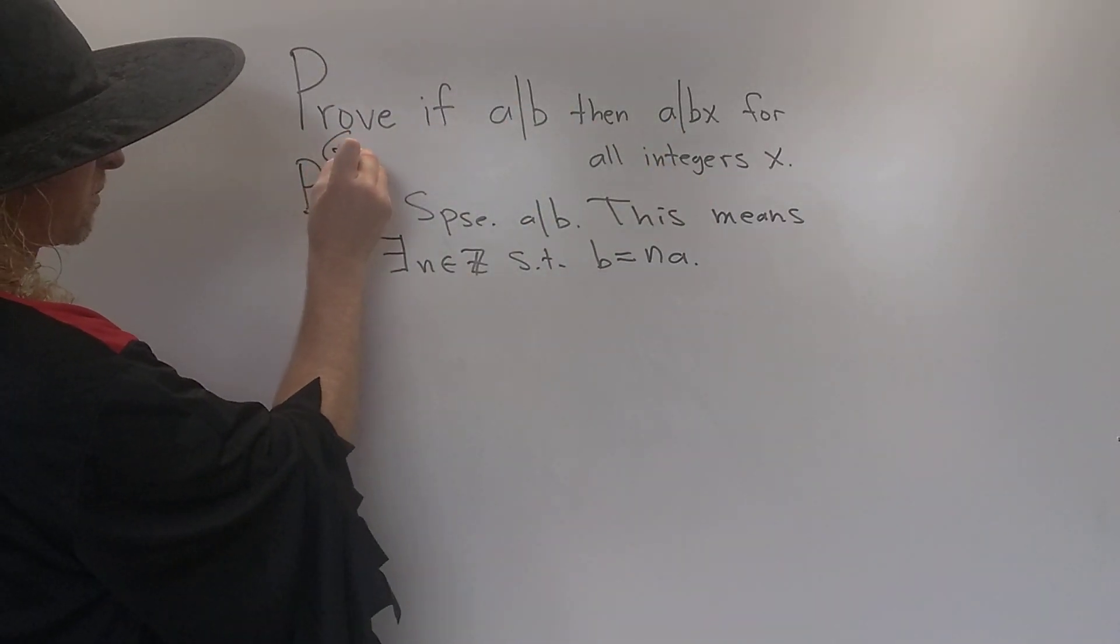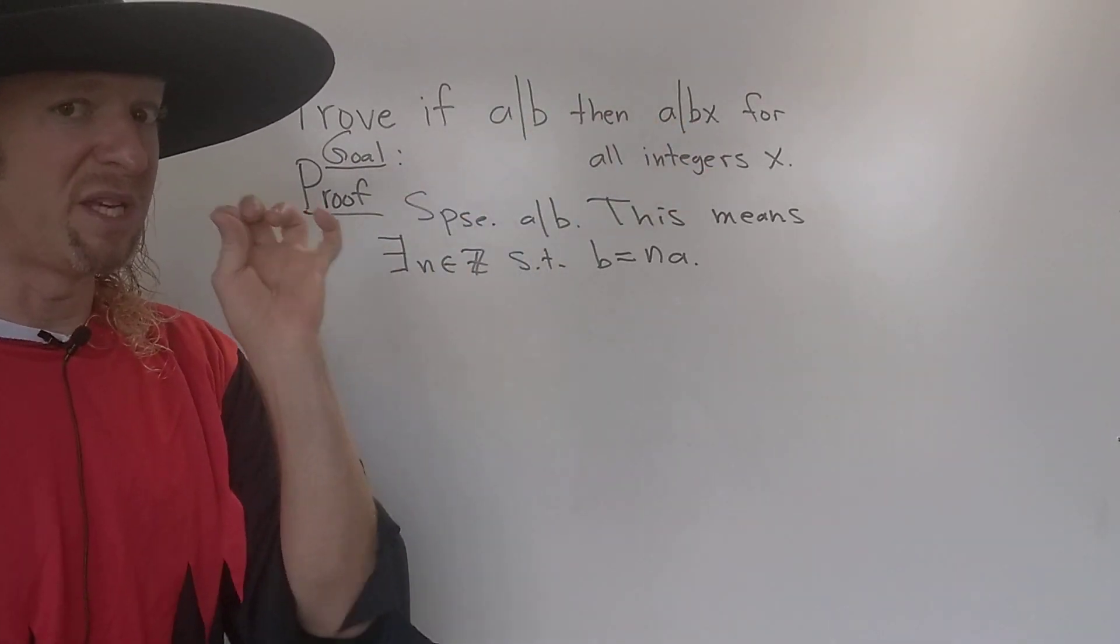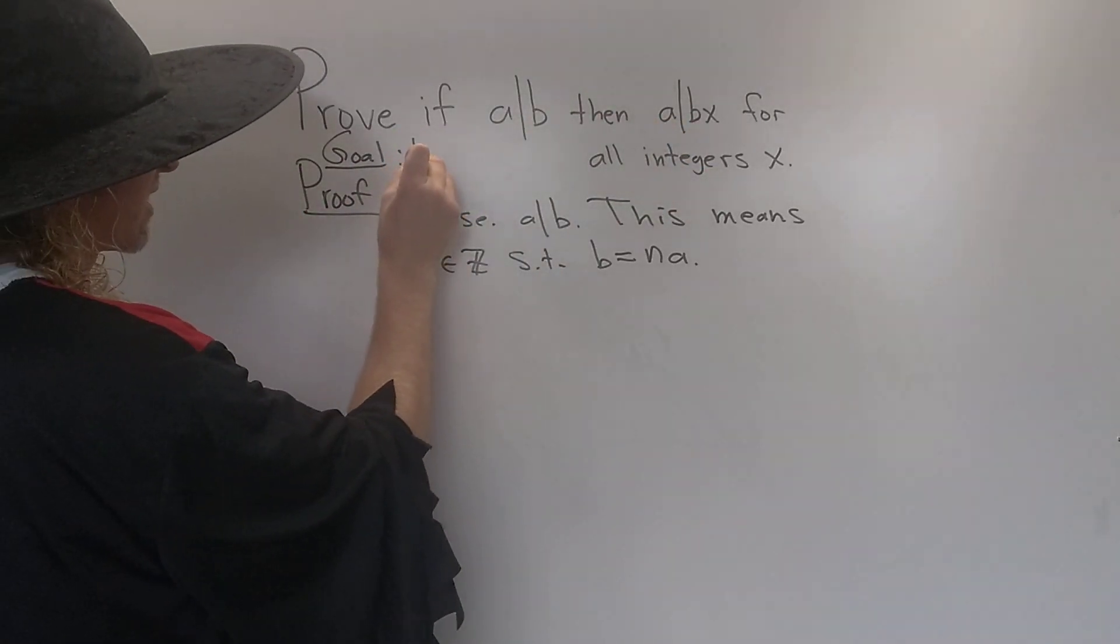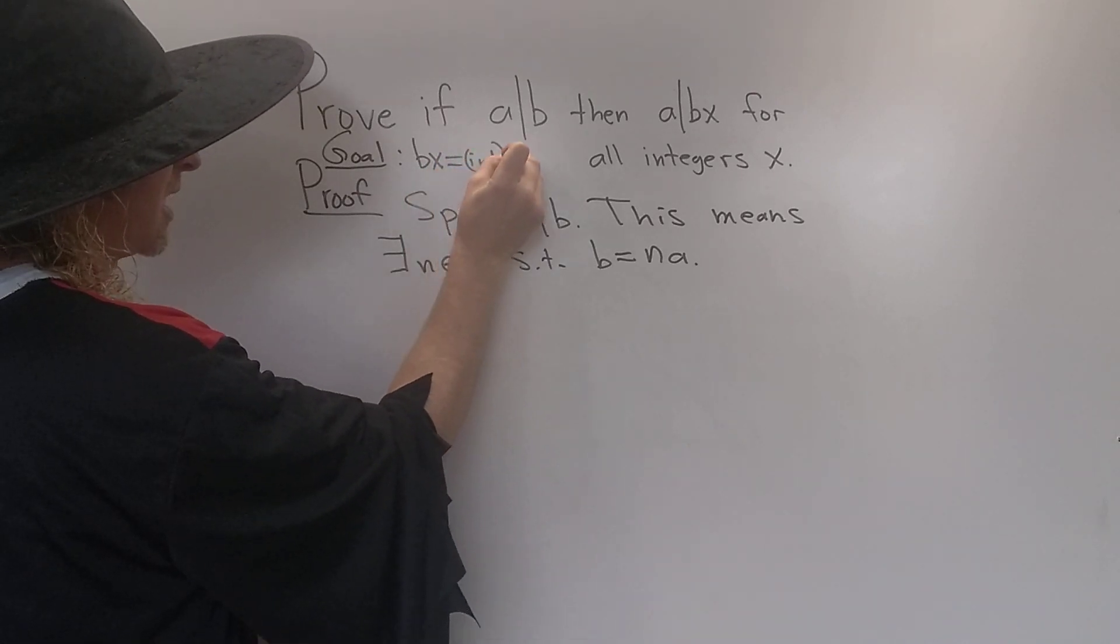So again, the goal. Let's think about this. We have to show that a divides bx. That means bx is a multiple of a. That means bx equals an integer times a. That's what we have to show.